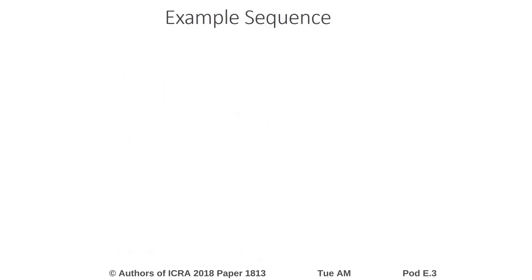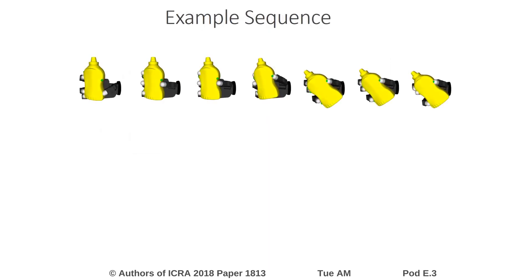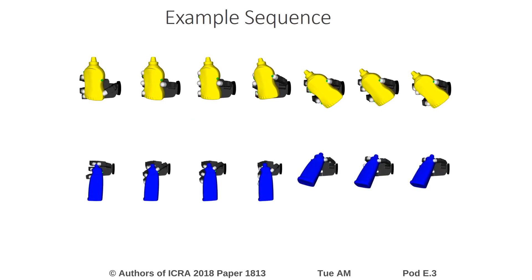Here we see some example sequences generated from our planner. In both these cases, the object moves from an initial grasp to the desired grasp by iterating between fingertip relocation and object reposing.